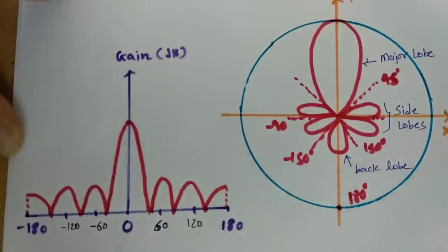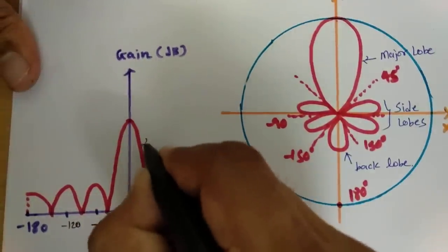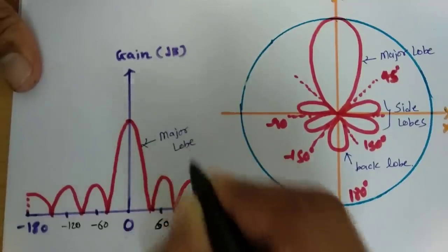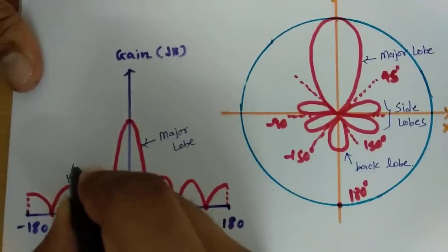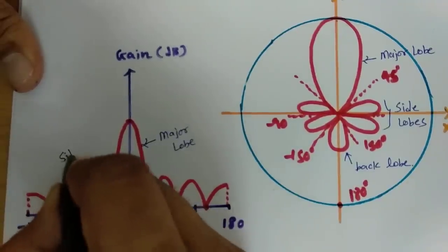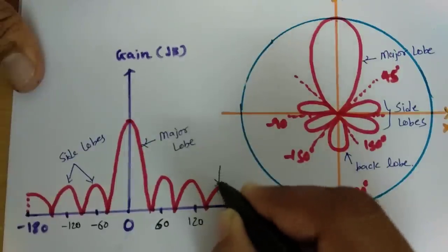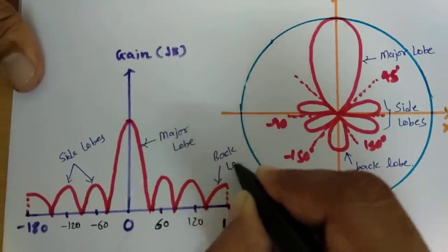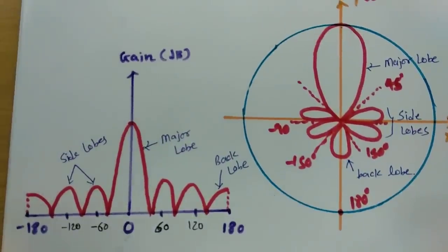So this is how the radiation pattern is structured: this is the major lobe, these are the side lobes, and this is the back lobe. That is how the radiation pattern is represented.